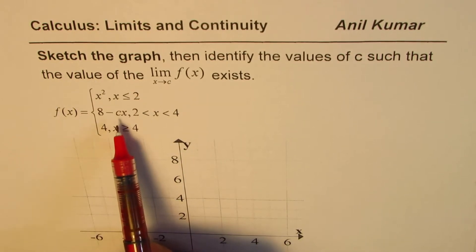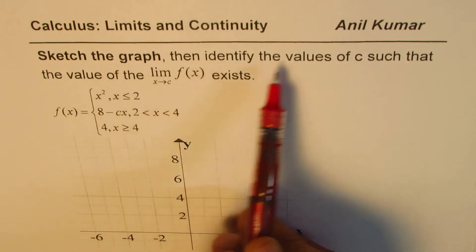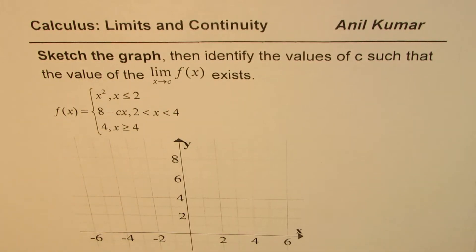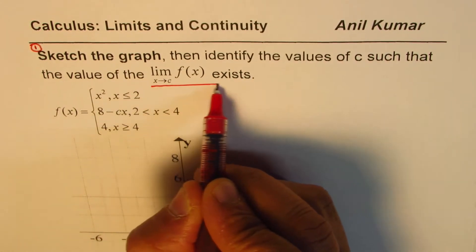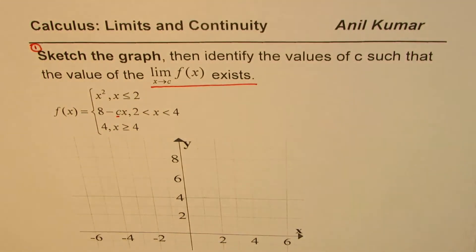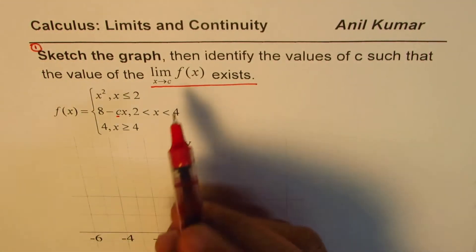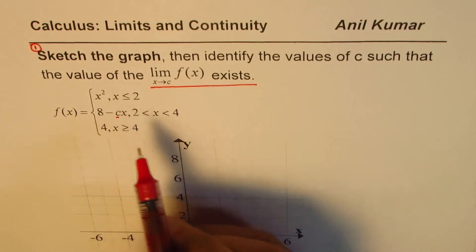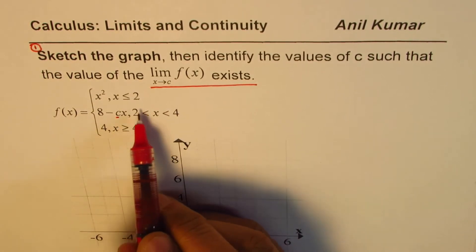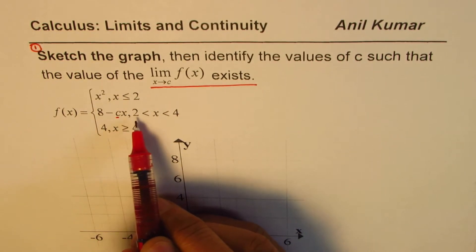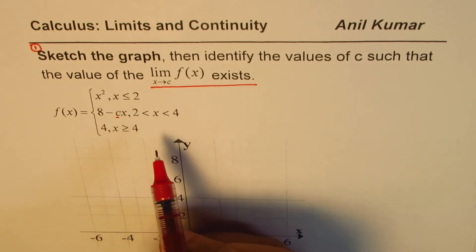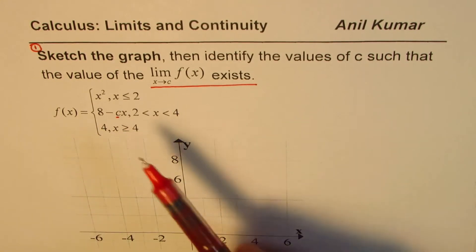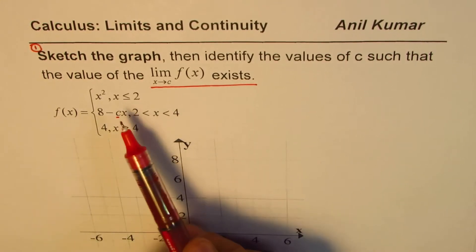To sketch this function we need to know the value of c, but the question asks us to sketch the graph first, then identify the value of c. The key condition is that the limit exists at c. If the limit exists, the function is essentially continuous at c, so to make this function continuous at c we need the values to match at x = 2 and x = 4.